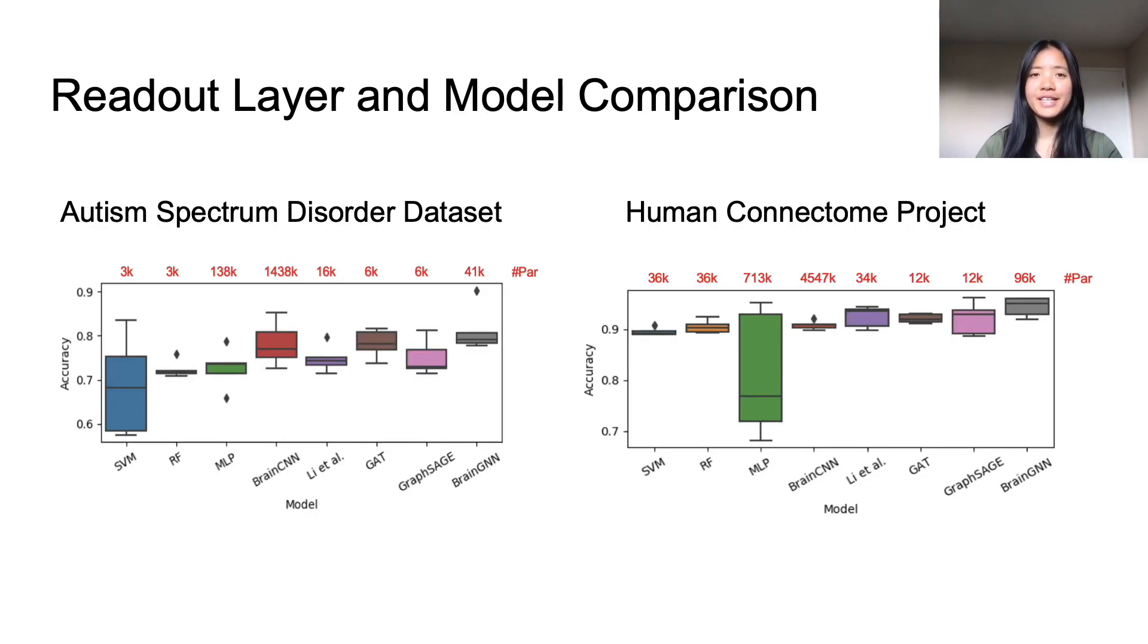The last step of the network is to give the final output and accurately identify autistic individuals from the healthy control for the ASD dataset, or to classify which of the seven cognitive tests was conducted for the HCP dataset. So how well did the BrainGNN perform?